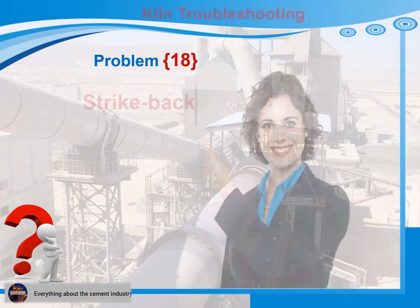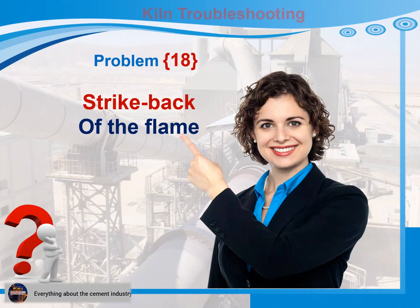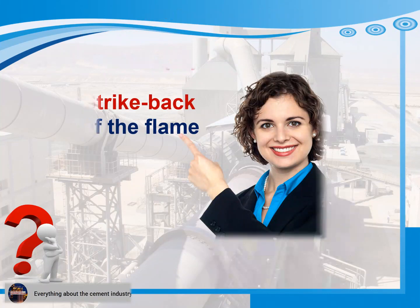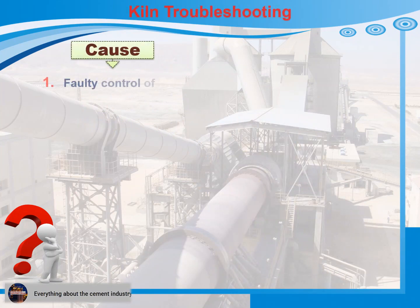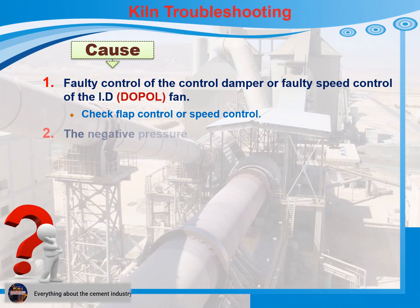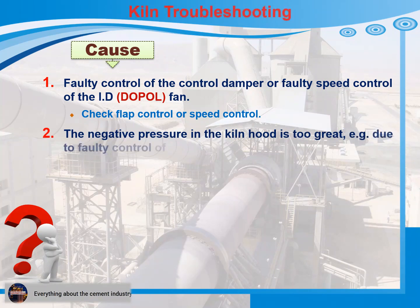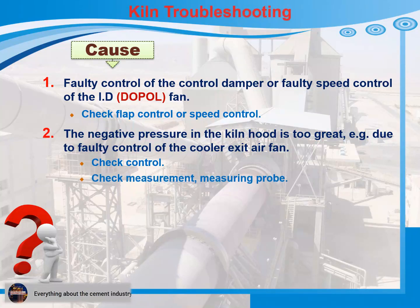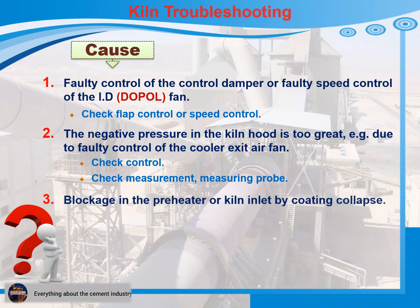Problem 18: Strike back of the flame. Cause 1: Faulty control of the control damper or faulty speed control of the ID fan. Recommendations for action: Check flap control or speed control. Cause 2: The negative pressure in the kiln hood is too great due to faulty control of the cooler exit air fan. Recommendations for action: 1) Check control. 2) Check measurement measuring probe. Cause 3: Blockage in the preheater or kiln inlet by coating collapse. Recommendations for action: Remove blockage.